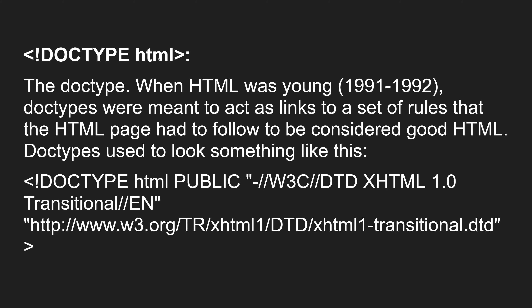Now DOCTYPE HTML — the DOCTYPE means document type. When HTML was young, that means in the early 1990s, doctypes were meant to act as links to a set of rules that the HTML page had to follow to be considered good HTML. So the reason we add this DOCTYPE at the top is to act as a link to a set of rules. If you are trying to write an HTML page, it needs to follow certain rules and regulations, and we need to add that link at the top — DOCTYPE HTML.